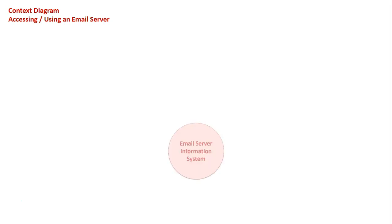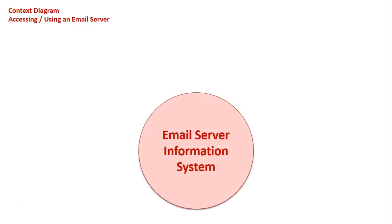This is going to be a very simple overview to introduce you to context diagrams. When we draw a context diagram, the first thing we usually draw is the single process in the middle that represents the entire information system. You may derive this from a keyword in an assessment or examination scenario — in this case it's 'email', so it will be 'Email Server Information System'. That's how you approach making your process in a context diagram.